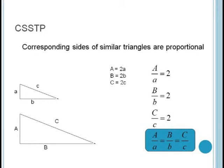That is, big A is equal to two times little a, big B is equal to two times little b, and big C is equal to two times little c. Or if we take the ratio of the large side divided by the small side, we see that we get the same value, two. Hence all three of these ratios must be proportional. This is usually stated as corresponding sides of similar triangles are proportional.